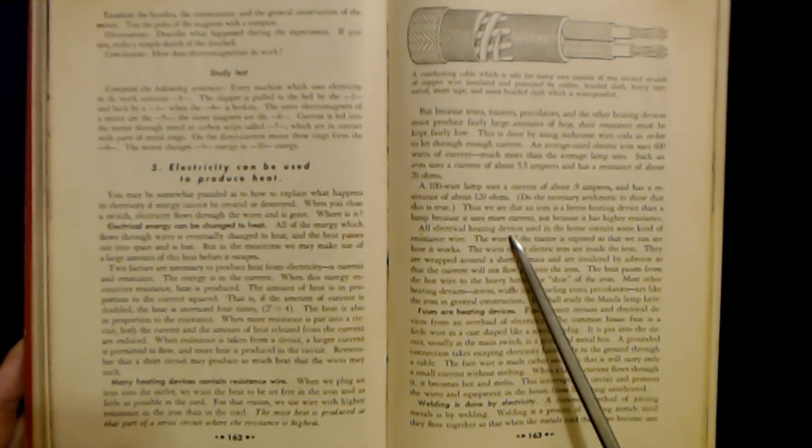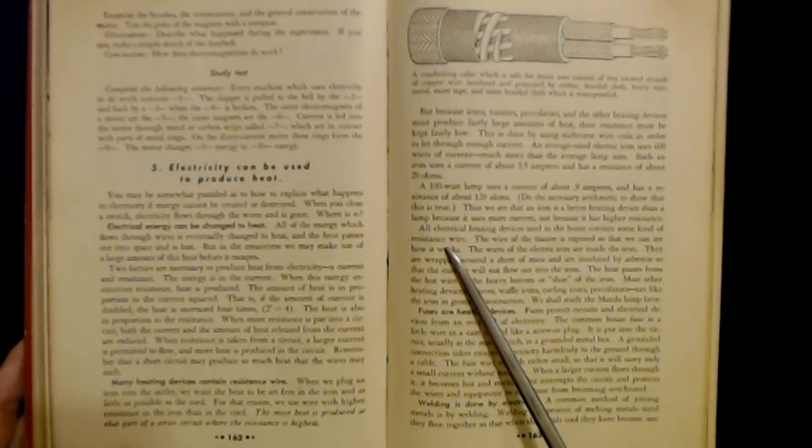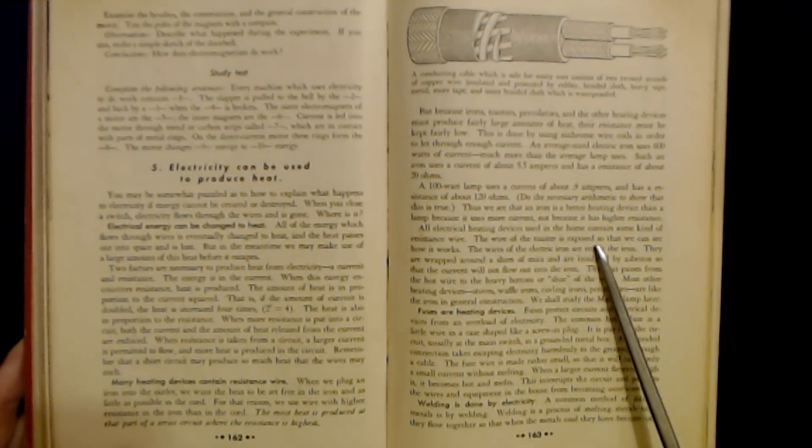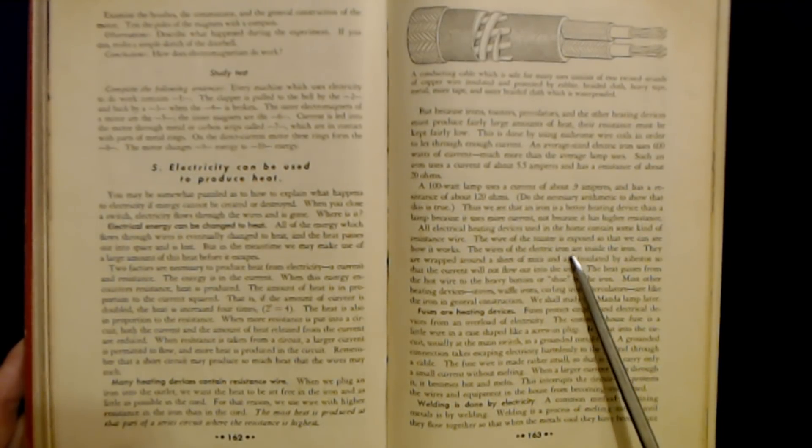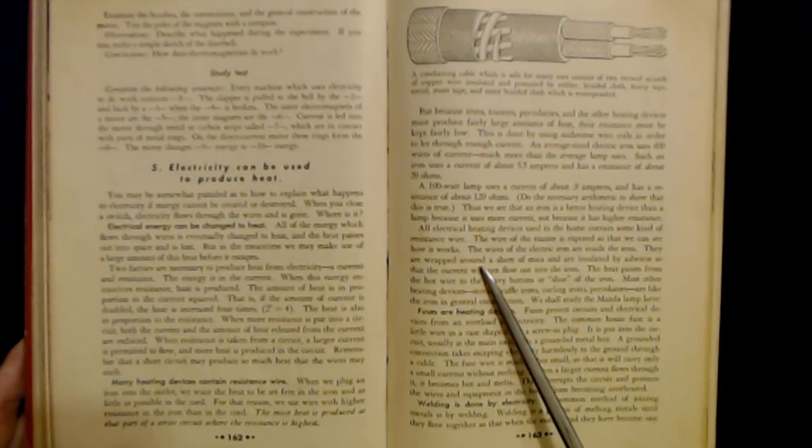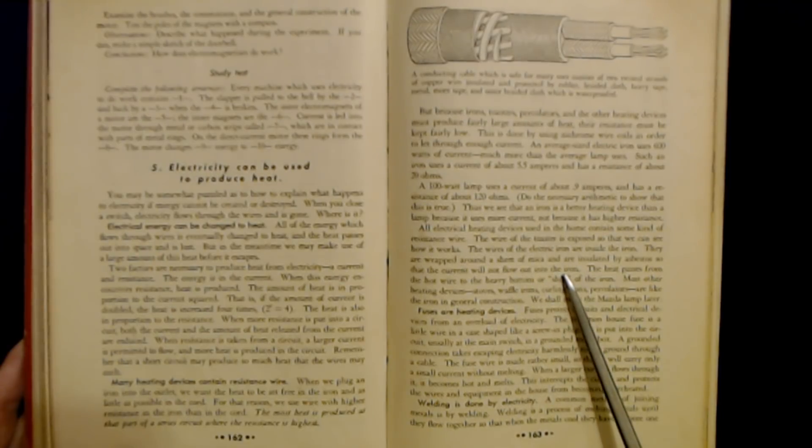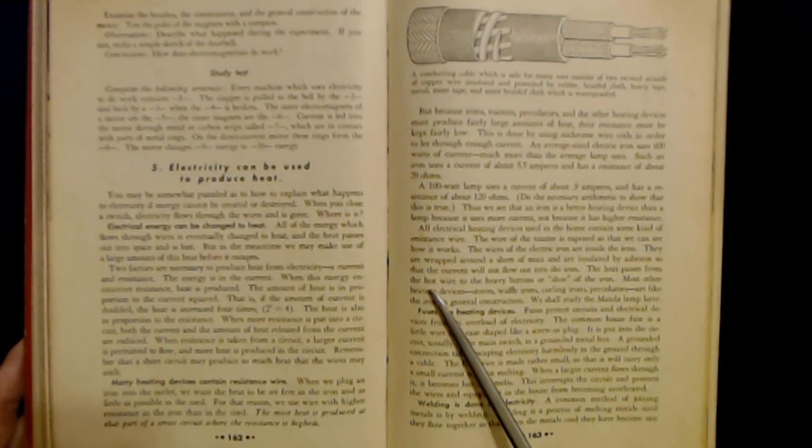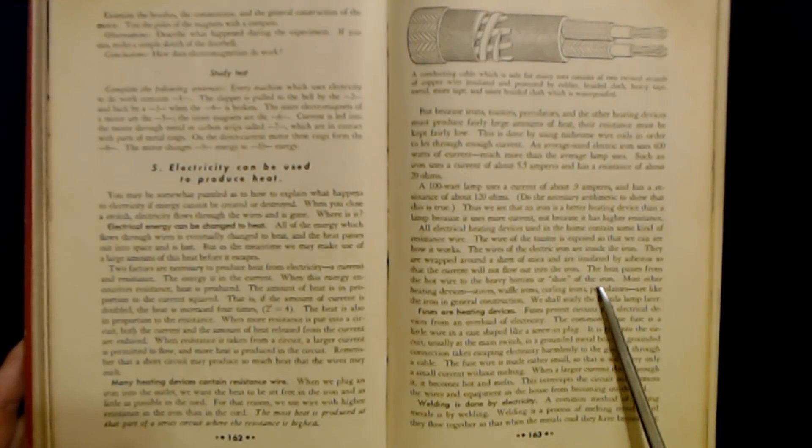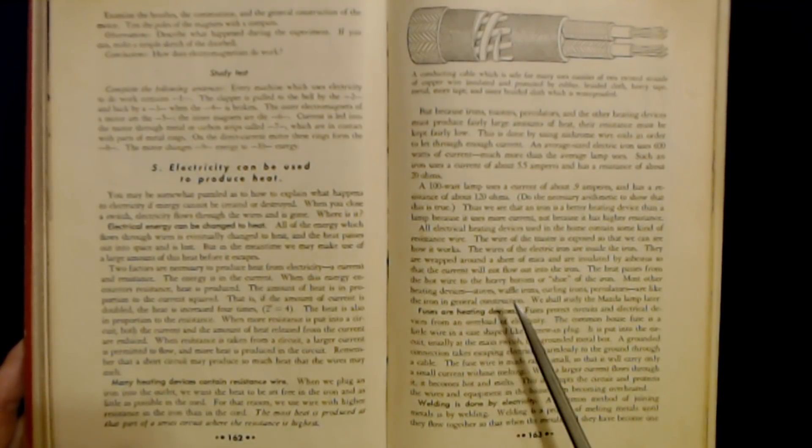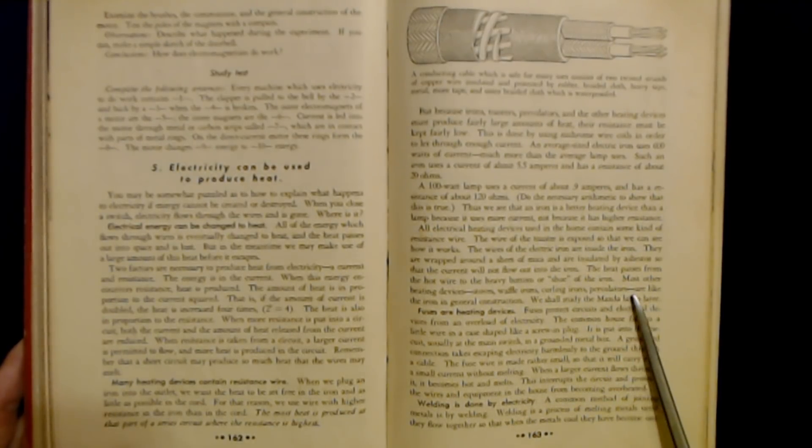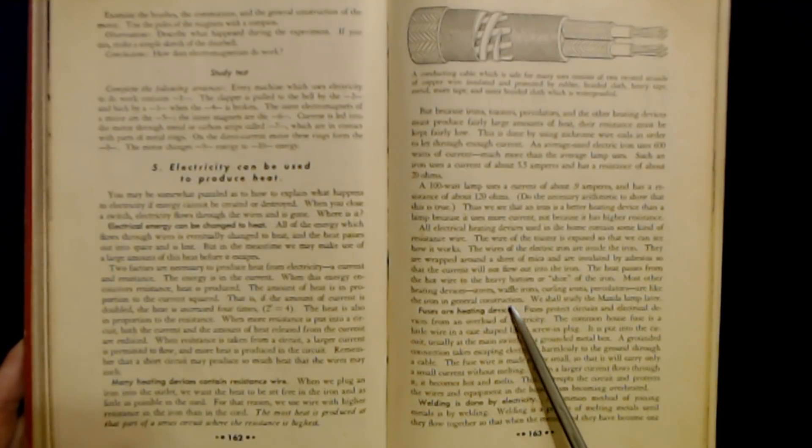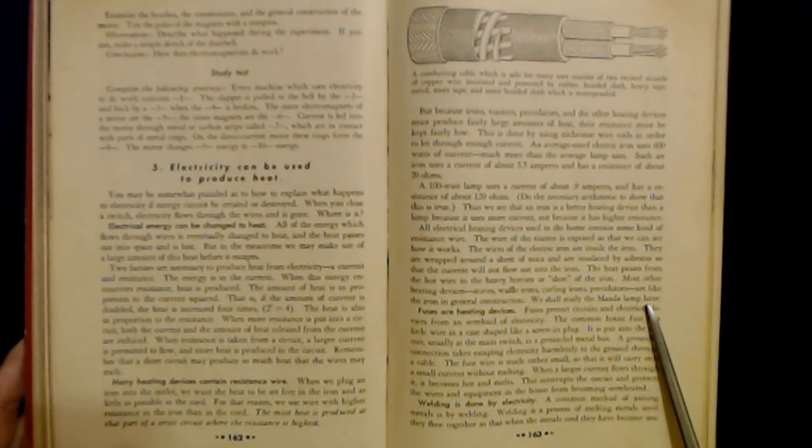All electrical heating devices used in the home contain some kind of resistance wire. The wire of the toaster is exposed so that we can see how it works. The wires of the electric iron are inside the iron. They are wrapped around a sheet of mica and are insulated by asbestos so that the current will not flow out into the iron. The heat passes from the hot wire to the heavy bottom or shoe of the iron. Most other heating devices—stoves, waffle irons, curling irons, percolators—are like the iron in general construction. We shall study the Mazda lamp later.